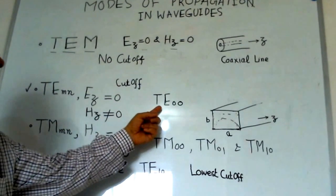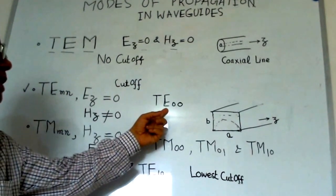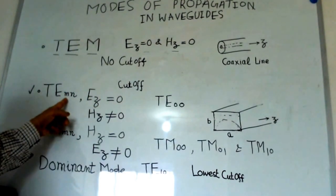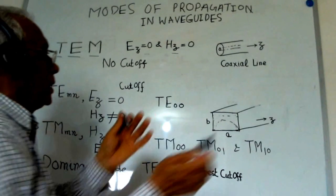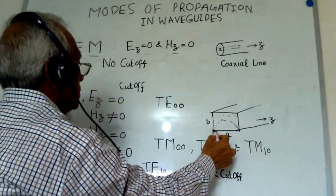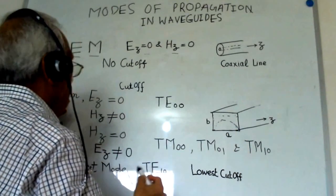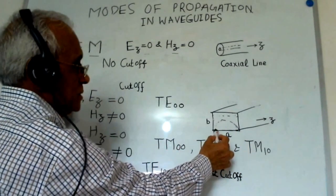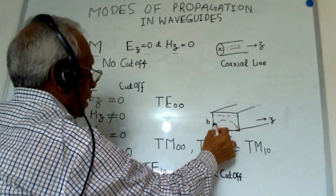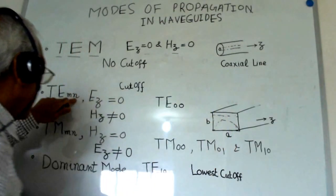For TE mode, the modes exist for all values of M and N. This M indicates the half-wave field variation in the wide dimension of the waveguide. N indicates the half-wave field variation in the narrow dimension.